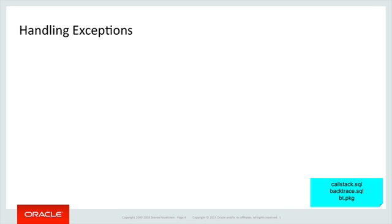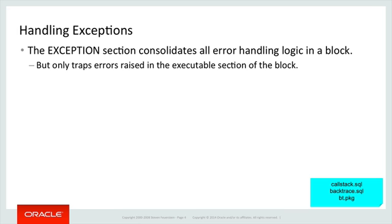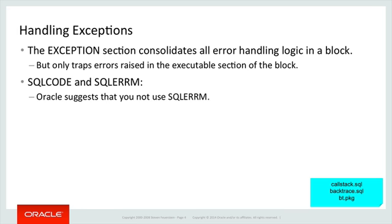Handling exceptions: something's gone wrong in your code — maybe a user entered something wrong, maybe a bug. An exception has been raised. We can create a single exception section that consolidates all error handling logic in a block, which is a really nice way to organize this. Remember, though, that the exception section can only handle errors raised in the executable section of the block. If an error is raised assigning a default value in the declaration section, it always goes out unhandled to the enclosing block. We'll touch on SQLCODE and SQLERRM — SQLCODE returns the current error code, SQLERRM returns the current error message. Oracle suggests you not use SQLERRM; I'll come back to that.